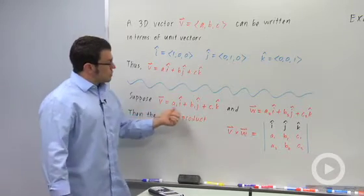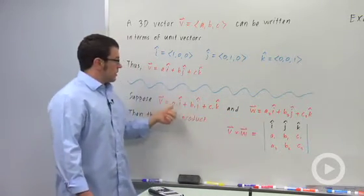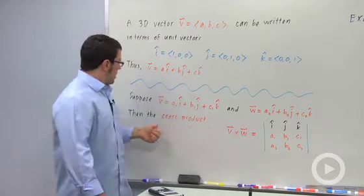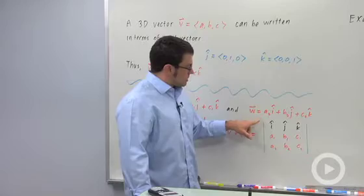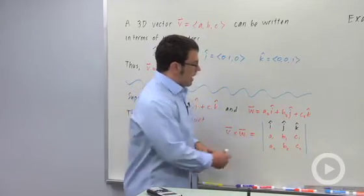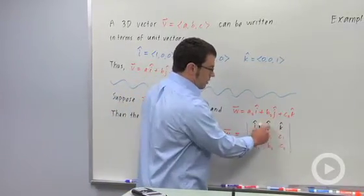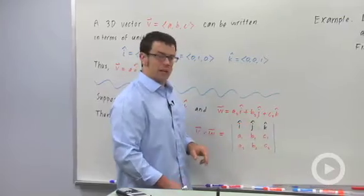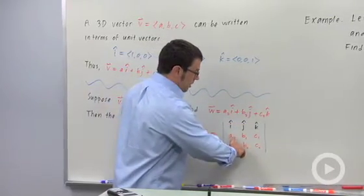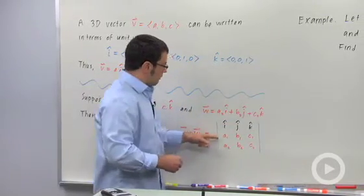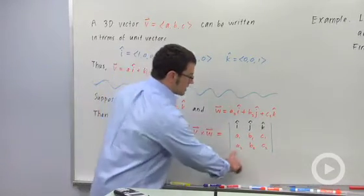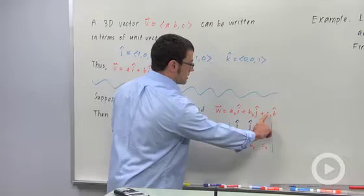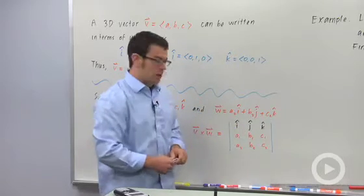Now let's suppose we have two vectors in this I, J, K form. Then the cross product is defined V cross W equals the determinant. Across the first row I put the three unit vectors I, J, and K. Then across the second row I put the components of the first vector in the cross product, V. And across the last row I put the components of the second vector in the cross product, W.